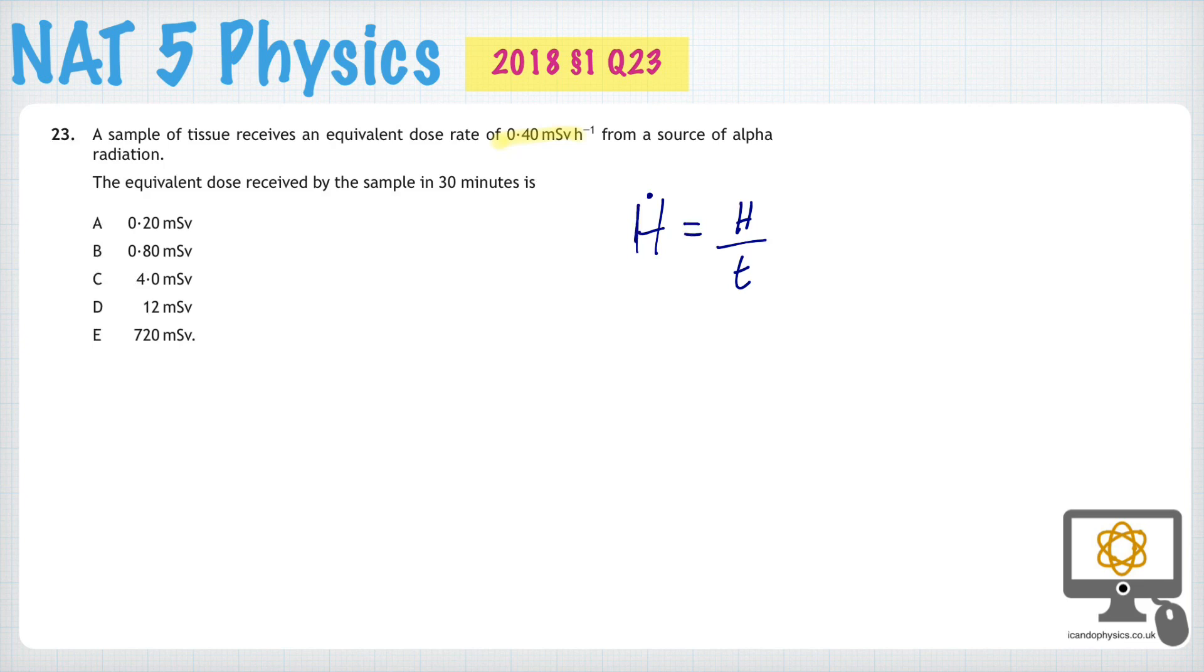So, what we'll do is we'll add that into the formula below. 0.4 times 10 to the minus 3, because it's in millisieverts, is equal to H over the time, and the time is 30 minutes.